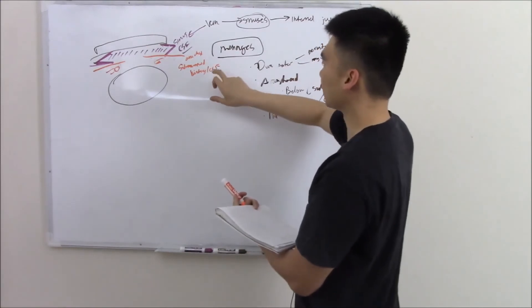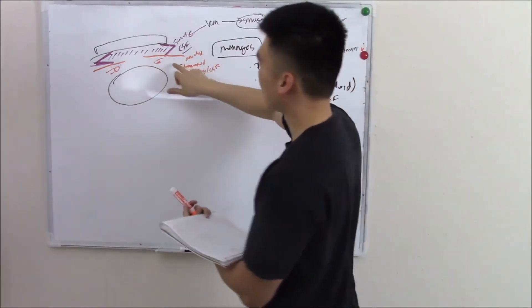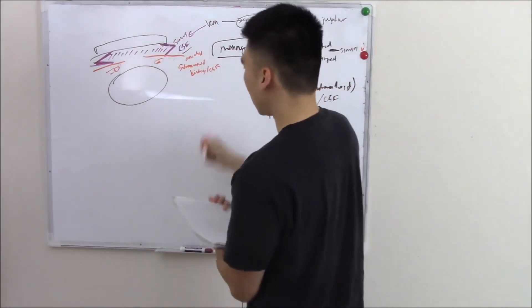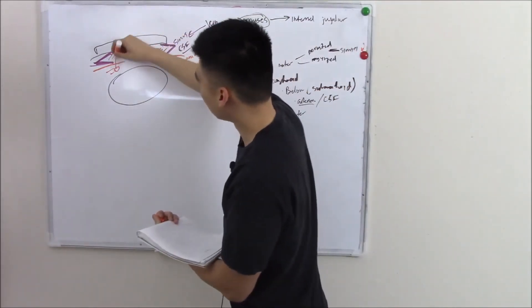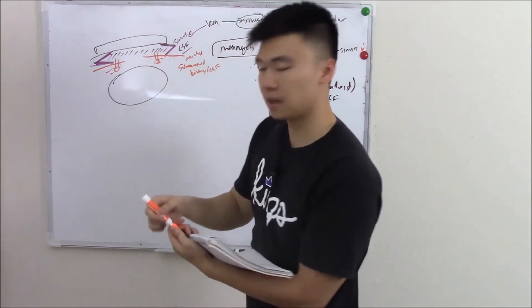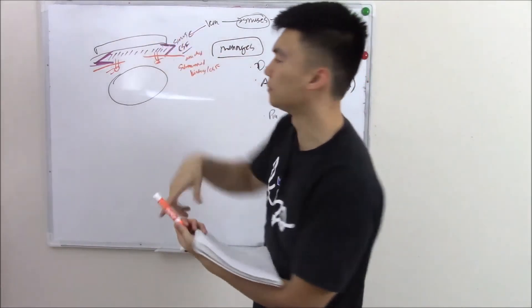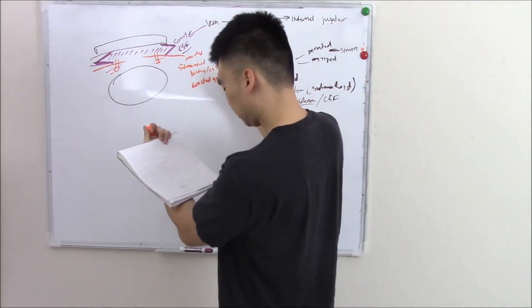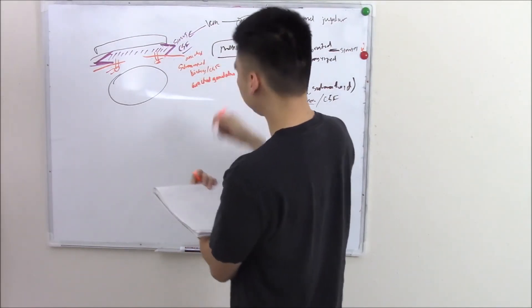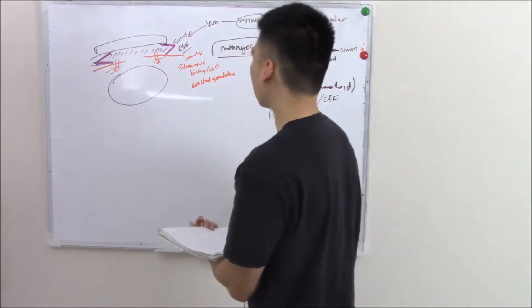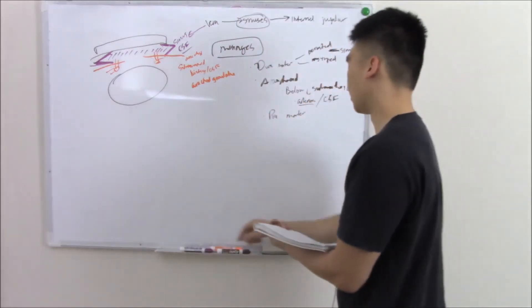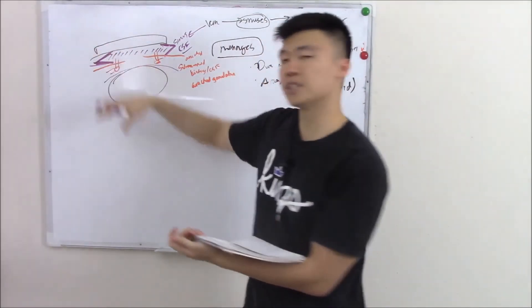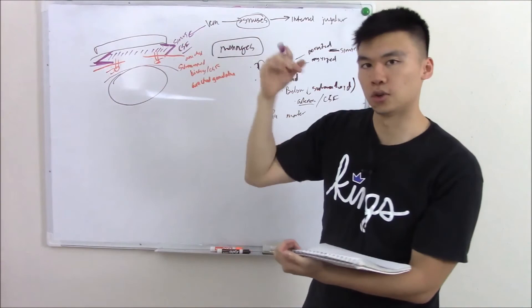You might ask, well, if this is where the CSF is, how does it get to the sinuses where it needs to drain? You have this little projection in your arachnoid called arachnoid granulations. And it kind of connects the two and lets the CSF drain. So I write arachnoid granulations. That's your arachnoid. And then last but not least, we have our pia mater, our last layer. And that covers your meninges. And that's the layer that protects your brain.